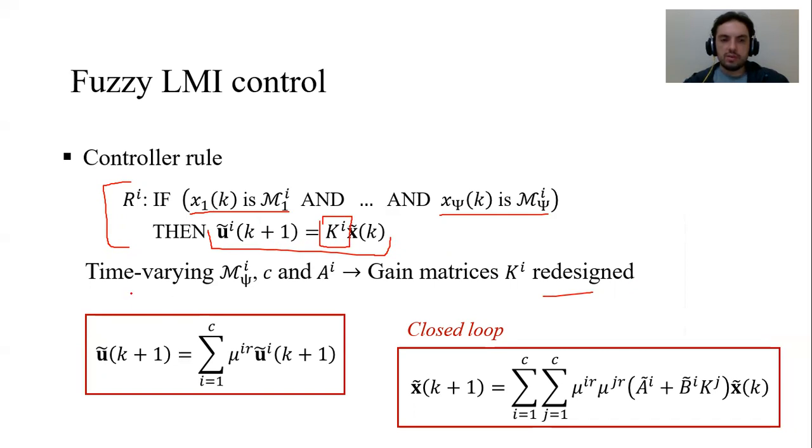So the controller is also evolving. We have time-varying membership functions, time-varying rule bases and system matrices and gain matrices K.